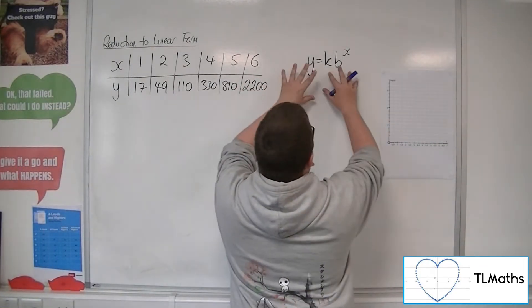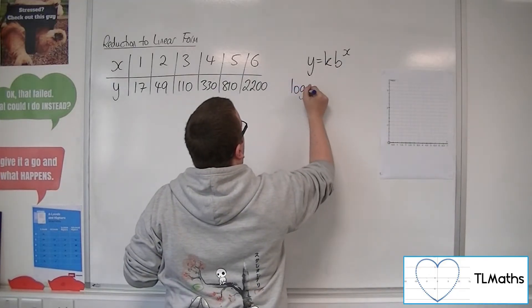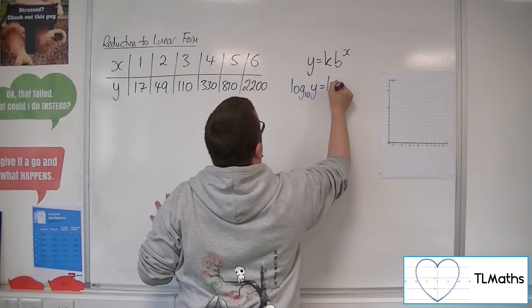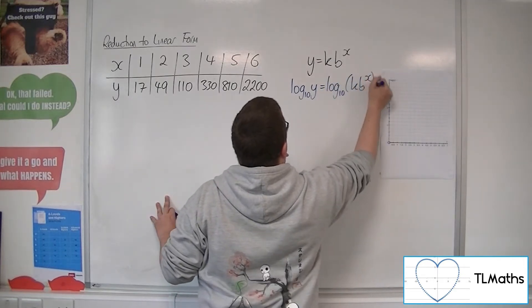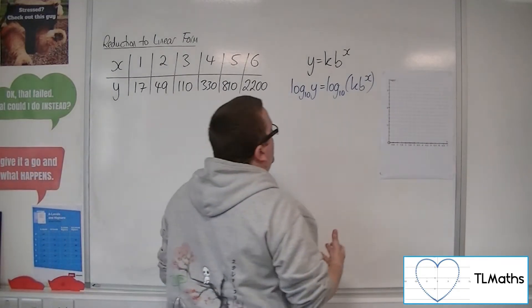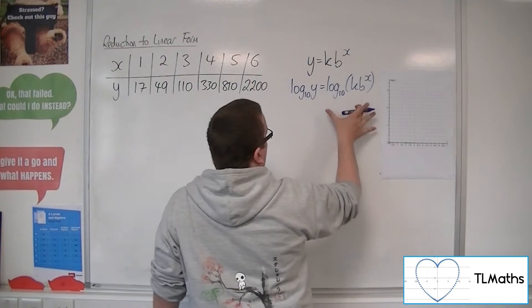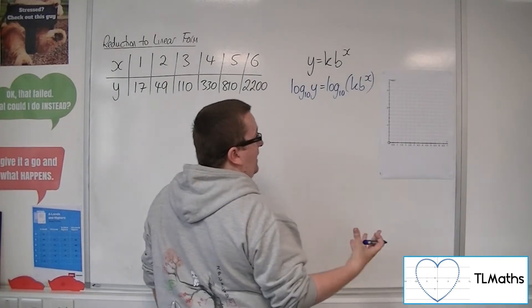So first thing is we reduce this to linear form by taking logarithms of both sides, so I'm going to take logarithm base 10 of both sides of that equation, and we've gone through this process in a previous video, so this we can break apart to log 10k plus log 10b to the x.